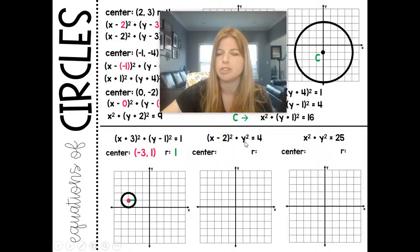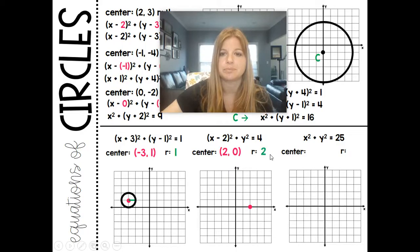x minus 2, and then just y squared. So my h is 2, my y is 0, square root of 4 is 2. Plot my center, do a radius of 2, and if I did a radius of 2 in all directions, that would be my circle.